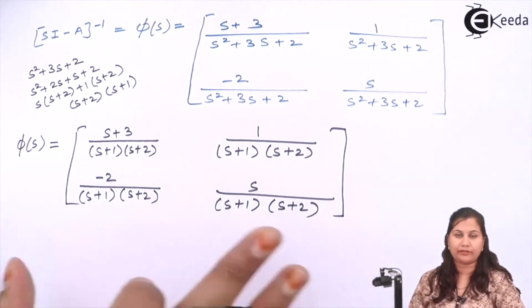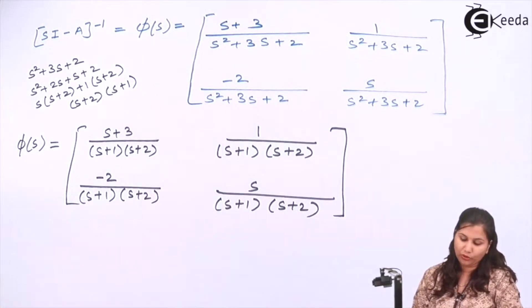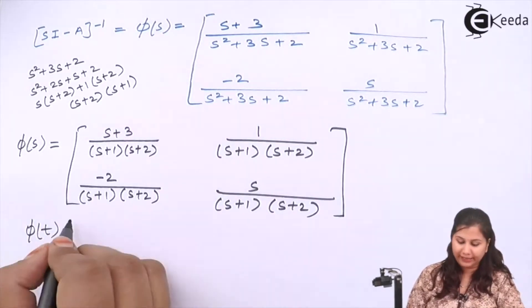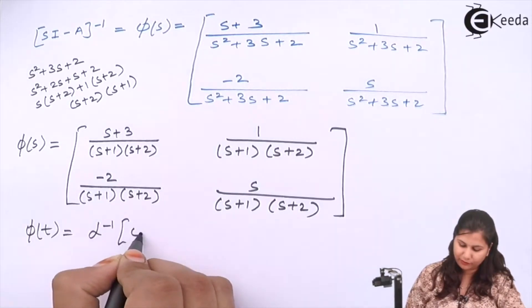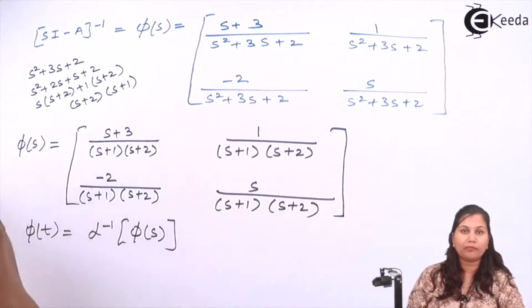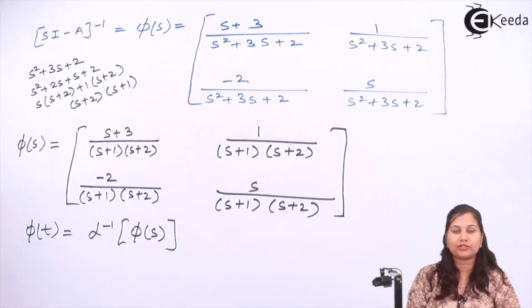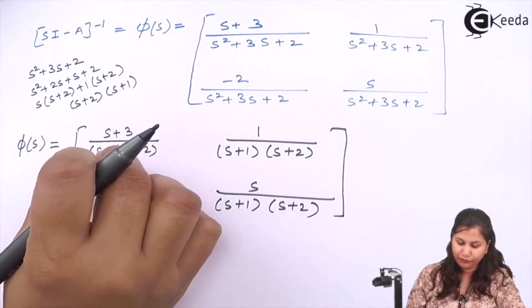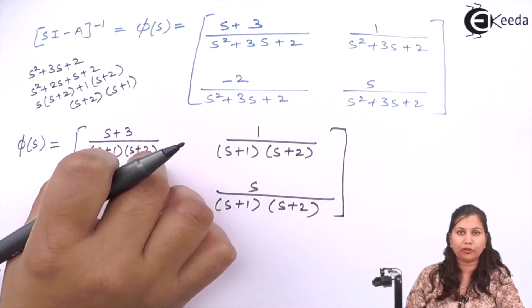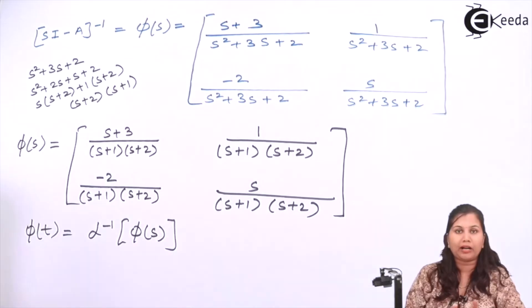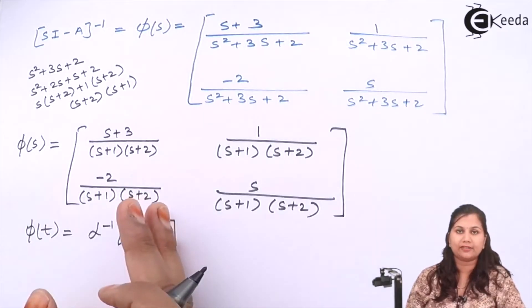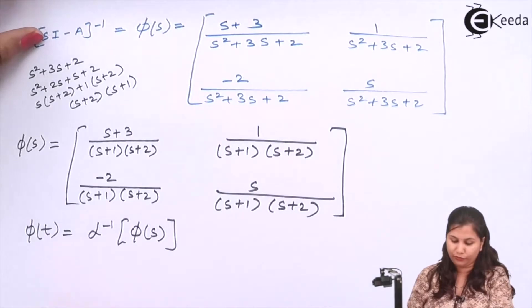This is the state transition matrix in the s-domain. We want to obtain it in the time domain, that is Φ(t). Φ(t) is the inverse Laplace transform of Φ(s). We need to convert these terms into a form so that we can apply the inverse Laplace transform formulas easily, by doing partial fraction decomposition.